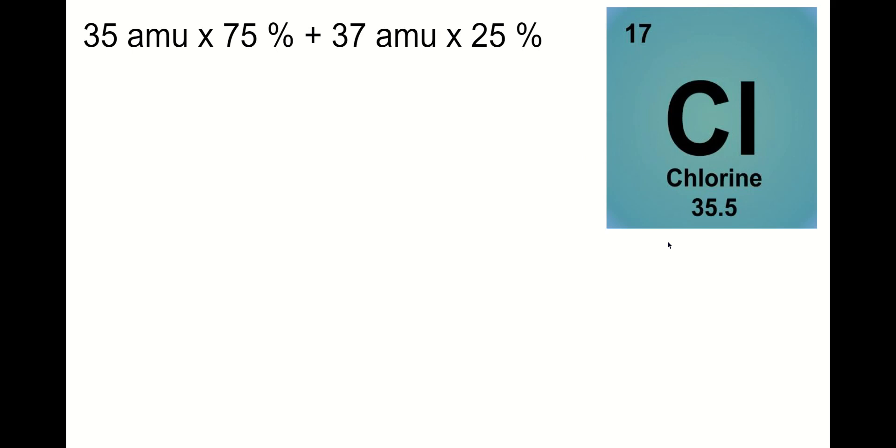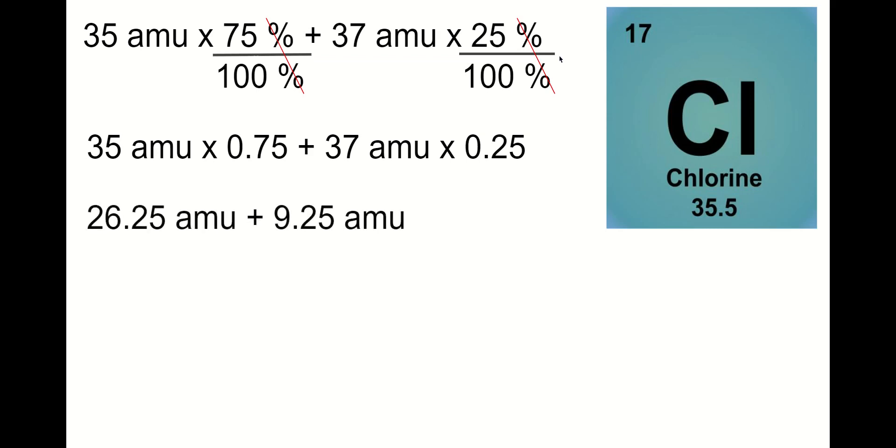So here's an example using chlorine of how we can apply that formula. So you take 35 AMUs times 75% because 75% of your sample would be chlorine 35 and 37 AMUs times 25%. Now we need to get rid of the percents so in order to do that we're going to divide both of these by 100% to get rid of our percent symbol. And so then we have 35 AMUs times 0.75 plus 37 AMUs times 0.25. And when we plug that into our calculator these are the resulting amounts. You add those together and you get 35.5.